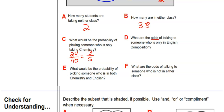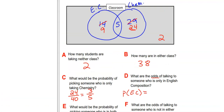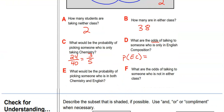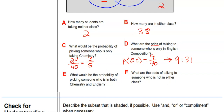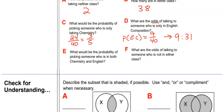The probability of only English Composition is 9 out of 40. Converting to odds: 9 to (40 − 9) = 9 to 31. The probability of picking someone in BOTH Chemistry and English is 5 out of 40, which reduces to 1/8.